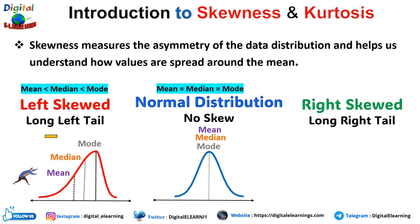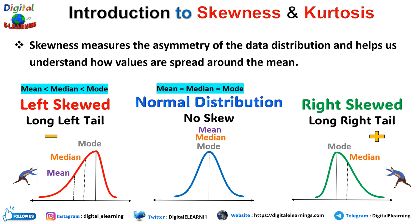Now let's switch to the right-tailed distribution, which also has a long right tail — also known as the positively skewed distribution, because there is a long tail in the positive direction. In this case, the mean is also to the right of the peak. The right tail of the distribution is longer or fatter than the left, so the mean is greater than the median, which is greater than the mode.